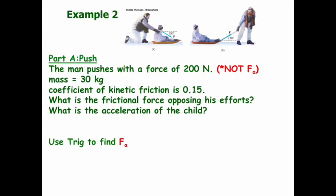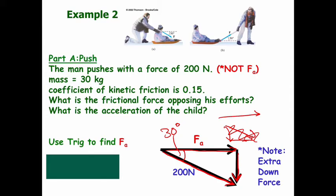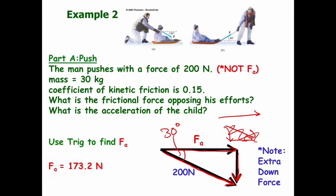We're going to use trig to find FA — a basic review. We set up our triangle: 200 newtons is the hypotenuse going at 30 degrees, FA is the adjacent horizontal side, and the downward component is the opposite side. Using SOH-CAH-TOA — cosine to find the x-side — FA equals cosine of 30 degrees times 200 newtons, which gives us FA equals 173.2 newtons.